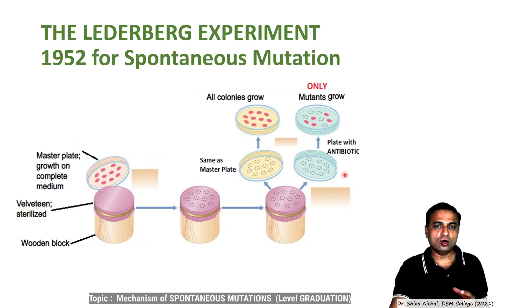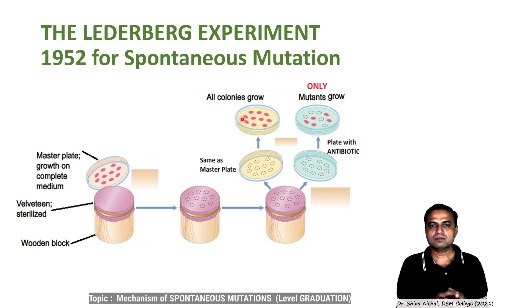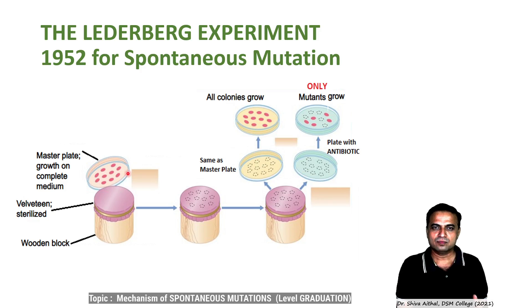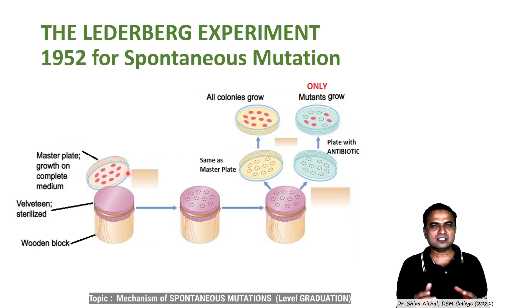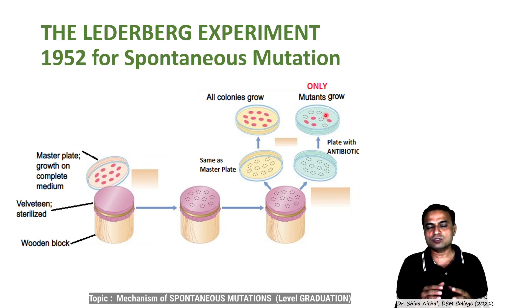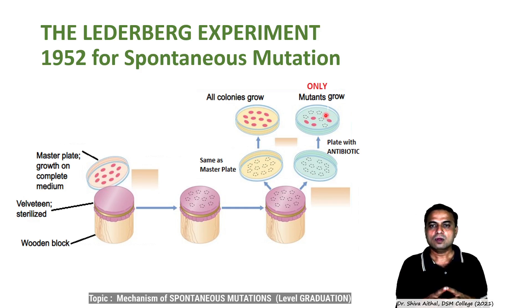On the non-antibiotic plate, all colonies grow similarly to the master plate — it is just a replica. On the selective plate containing antibiotic at minimum inhibitory concentration, what is expected is that not a single colony should grow because the antibiotic would have inhibited the wild-type E. coli. But surprisingly, Lederberg et al. found that there were some — a few — colonies. Those colonies were antibiotic-resistant colonies.